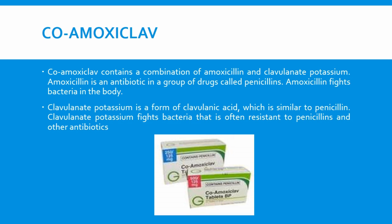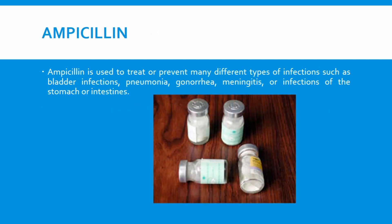Ampicillin is used to treat or prevent many different types of infections such as bladder infections, pneumonia, gonorrhea, meningitis, or infections of the stomach or intestine.